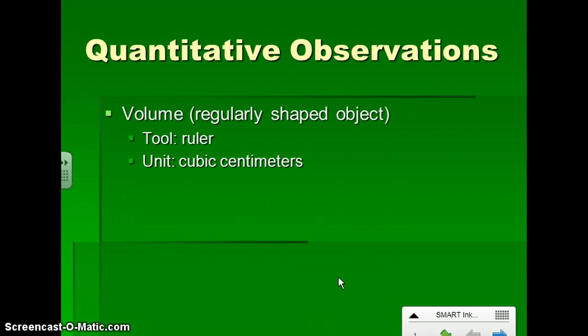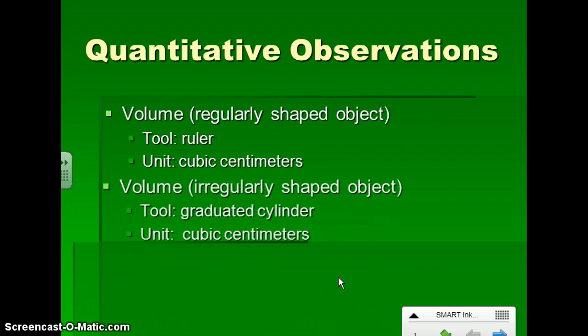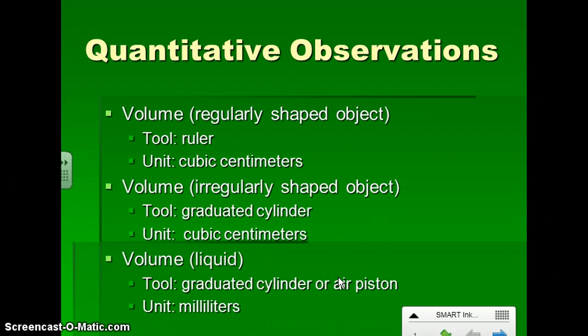Back to our quantitative observations. We have three different ways to measure volume. We have the volume of a regularly shaped object, like a Kleenex box, and we'll just use a ruler, and we'll measure that in cubic centimeters. We have the volume of irregularly shaped objects. That can be something like a rock, and we'll use a graduated cylinder for that. There's more information coming up on that, and we'll measure that in cubic centimeters. We can also measure the volume of liquids or grainy solids using graduated cylinders or air pistons, and we'll use milliliters for those.